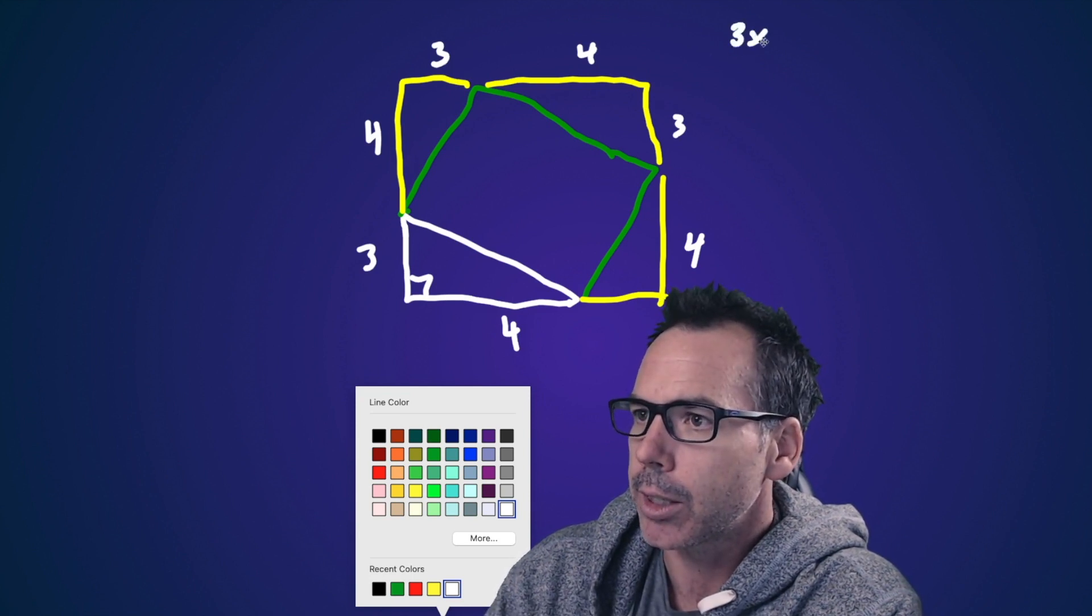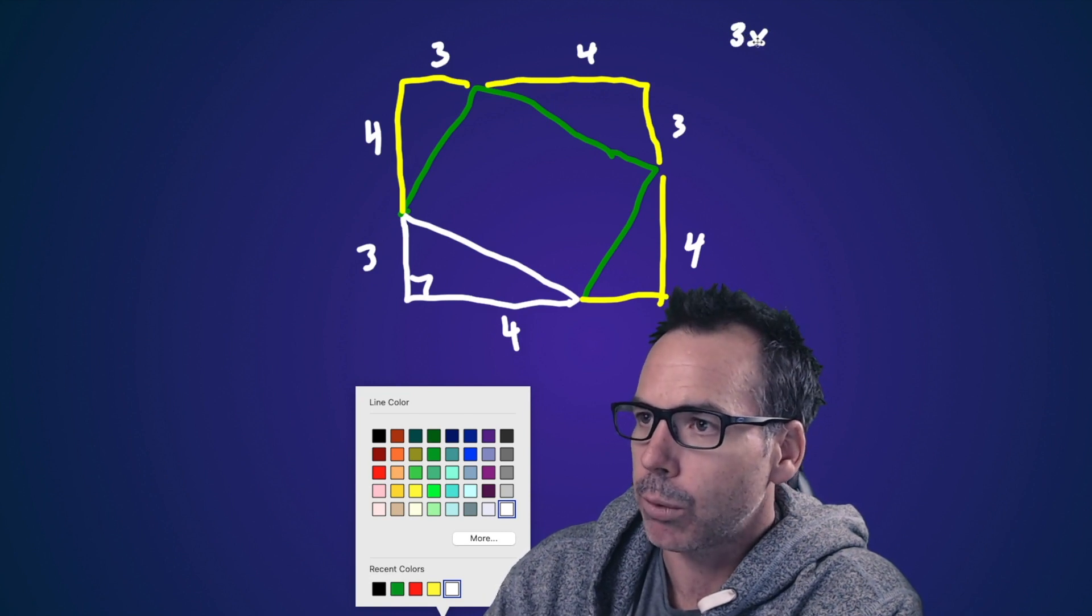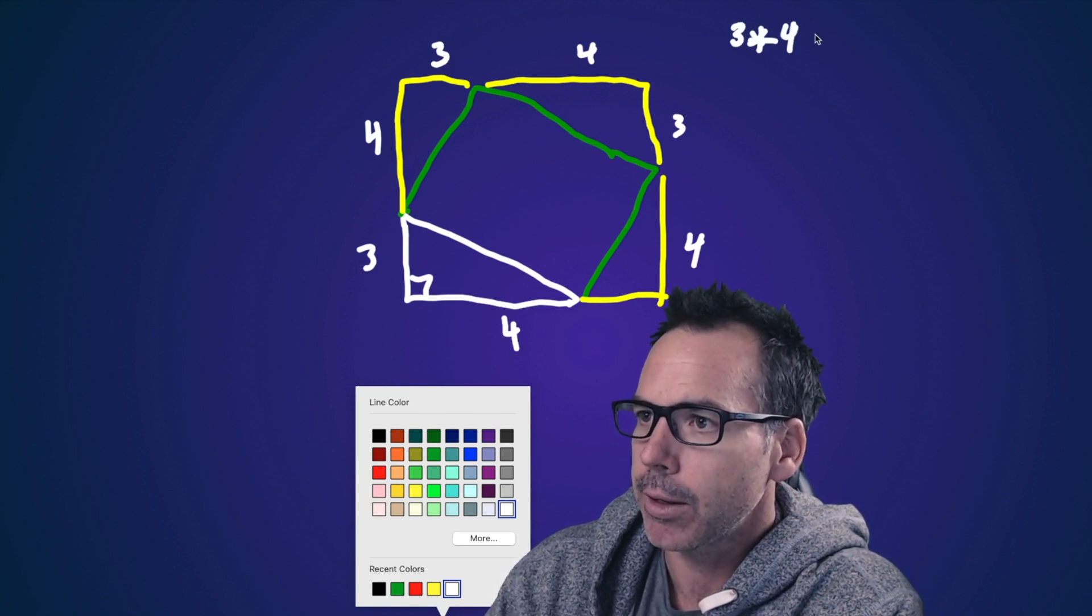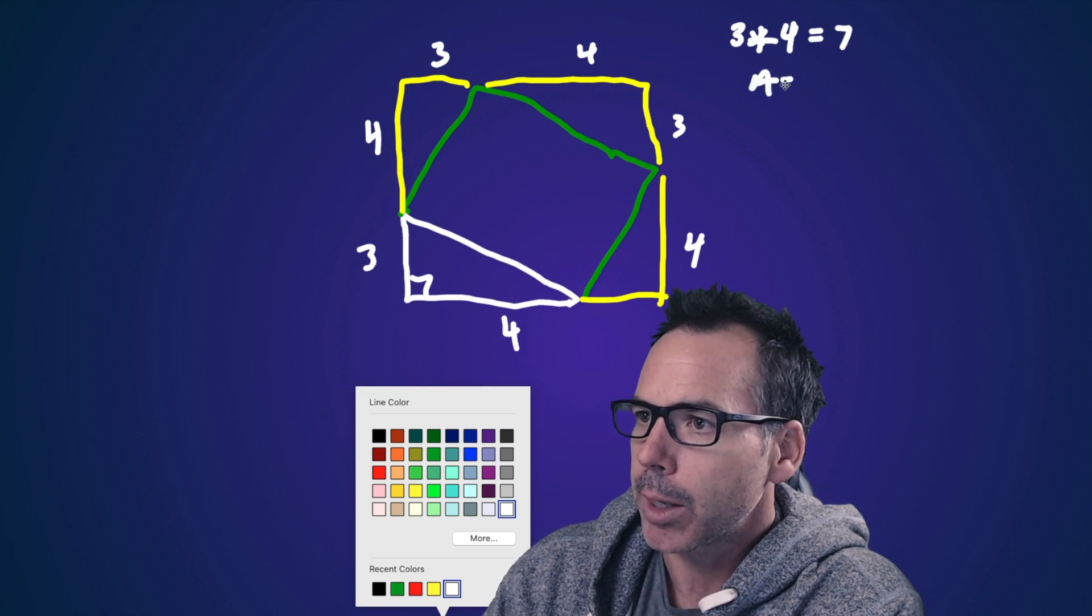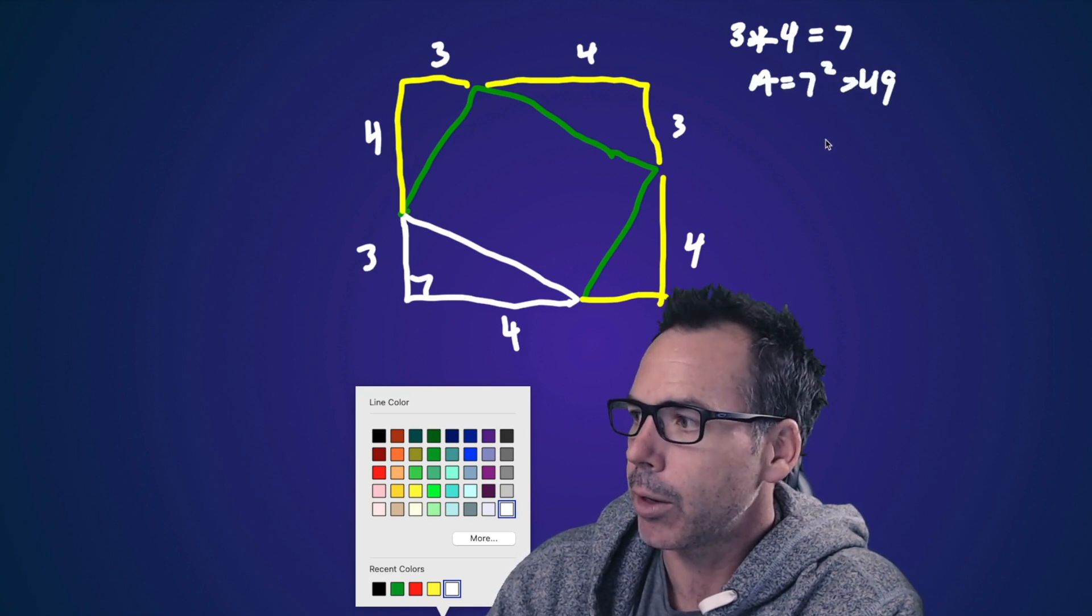So we could find its area by finding all the big area. So we could go, hey, this is three plus four. That's seven. And this is a seven by seven square. So my area of the big square is seven squared, which we get is 49 square units.